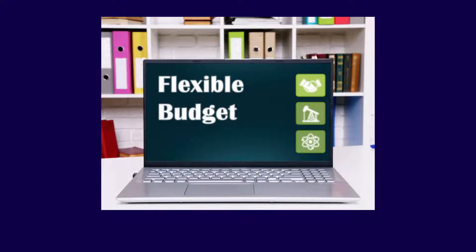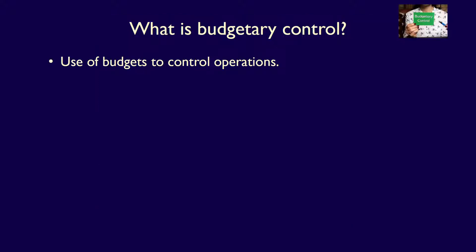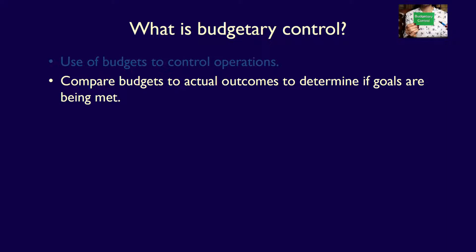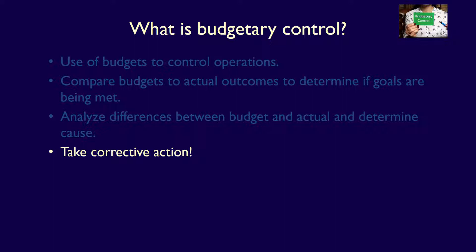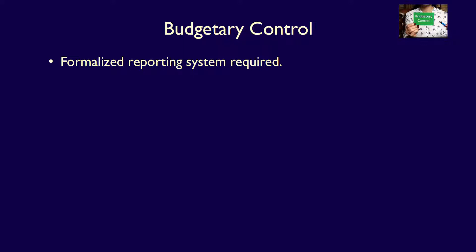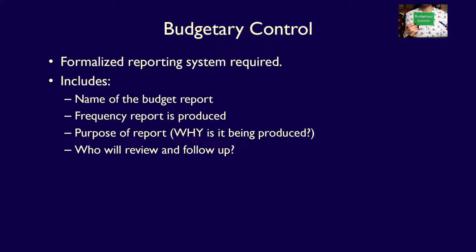What is a flexible budget and how is it used? Budgetary control is when organizations use budgets to control operations. They do this by comparing budgets to actual outcomes in order to determine if the organization's plans are being achieved. By analyzing the differences between the budget and the actual results, we can determine what the difference is, investigate the costs, and take corrective action when required. We do this by having a formalized reporting system which provides reports used to ensure budgetary control is in place and working.